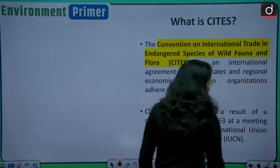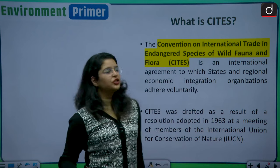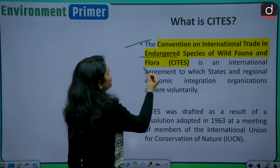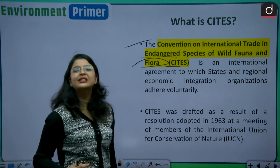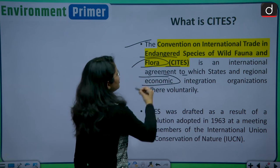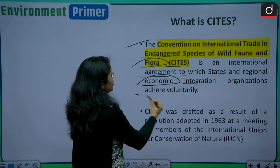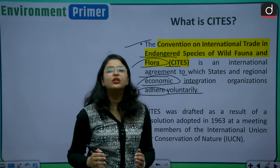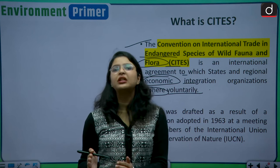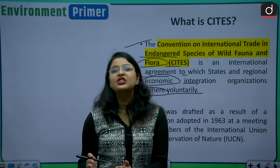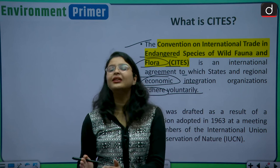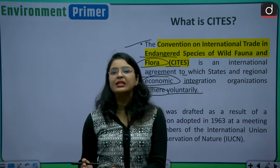This brings us to the moot question of our today's discussion — what exactly is this CITES Convention? The Convention on International Trade in Endangered Species of Wild Flora and Fauna, also known as the CITES Convention, is an international agreement to which states and regional economic integration organizations adhere voluntarily. This convention is the only international agreement which prevents and restricts international trade of those species which are threatened.